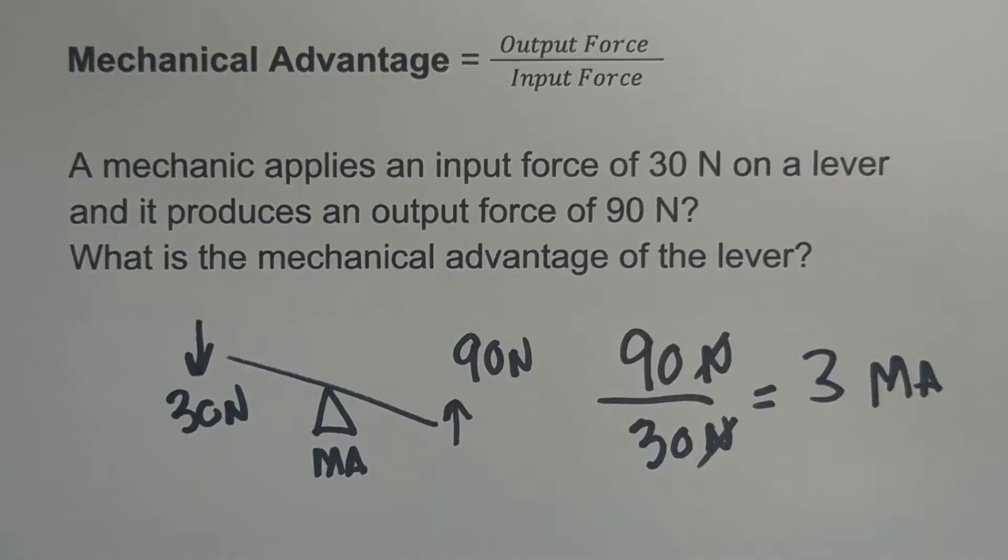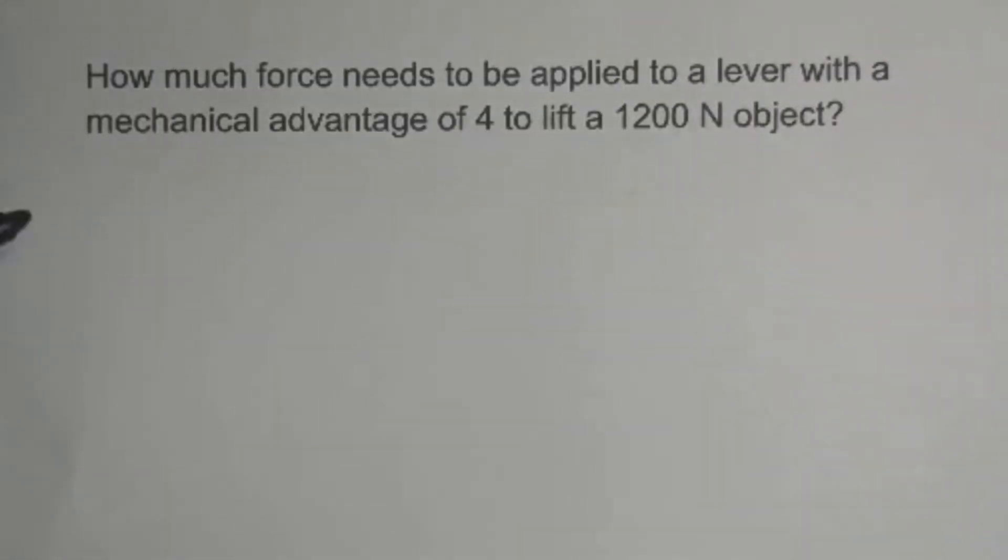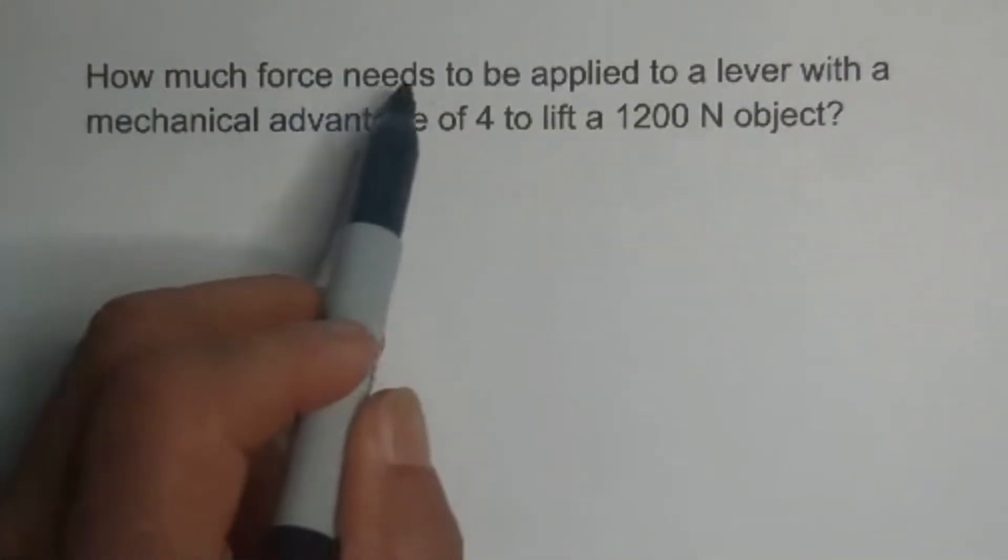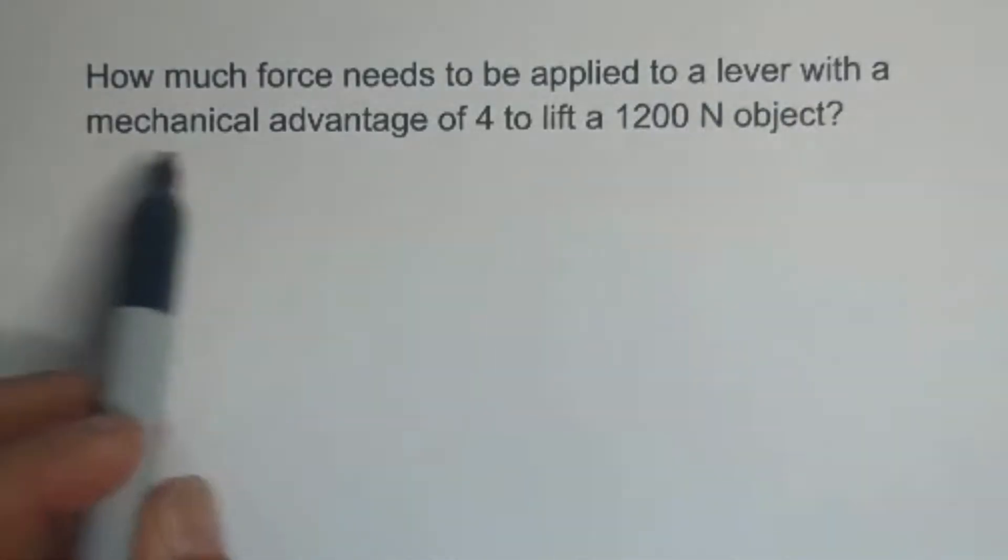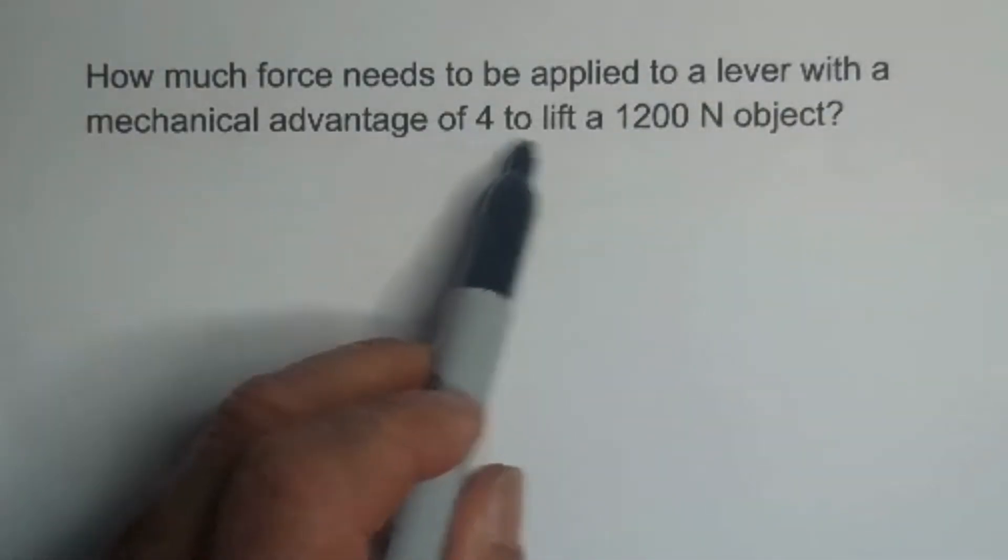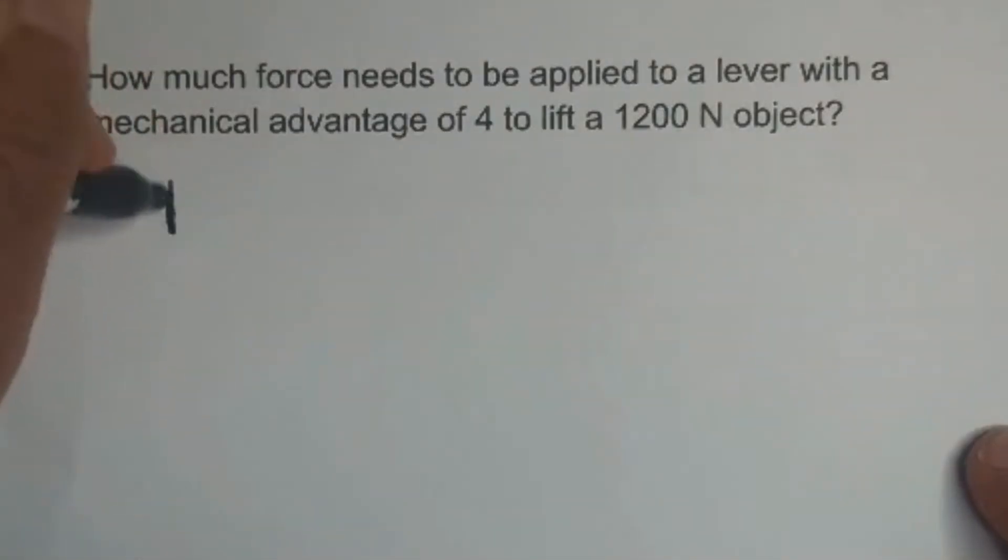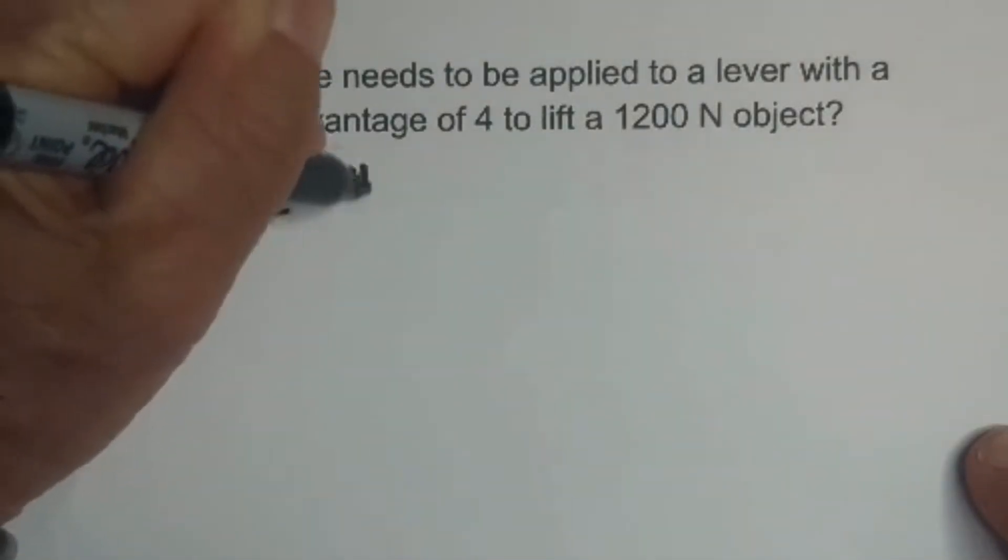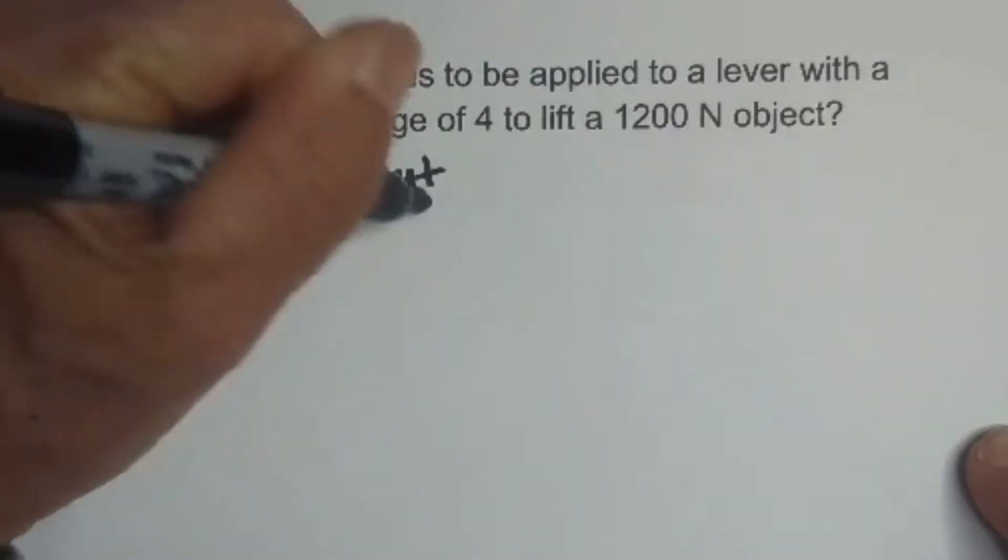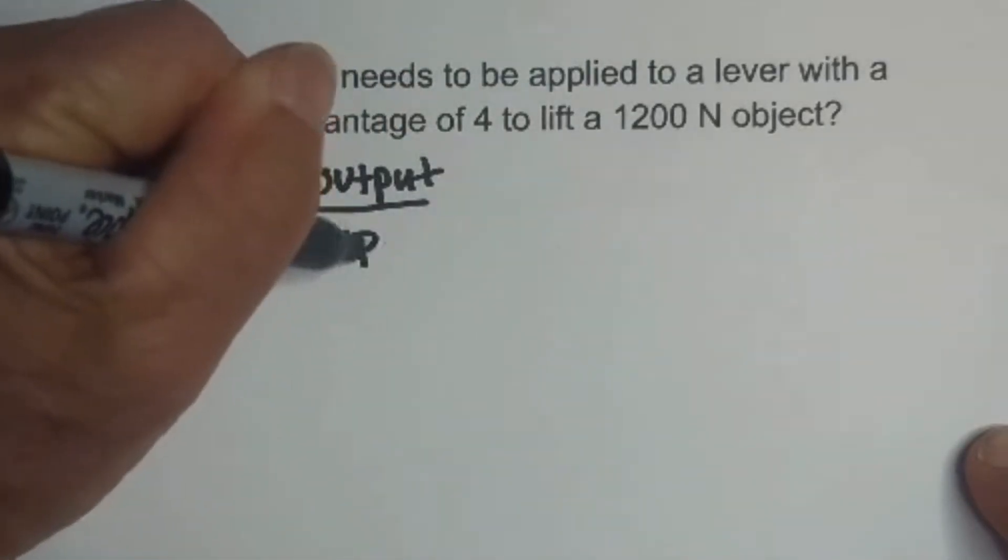Let's look at another example. With this example, this question says, how much force needs to be applied to a lever with a mechanical advantage of 4 to lift a 1200 newton object. Remember, mechanical advantage equals output force over input.